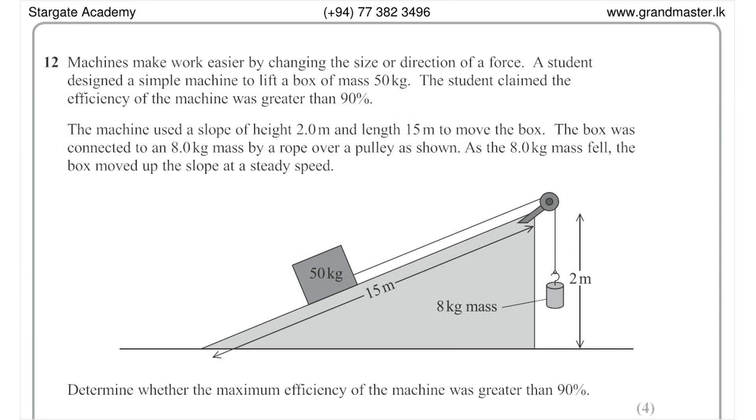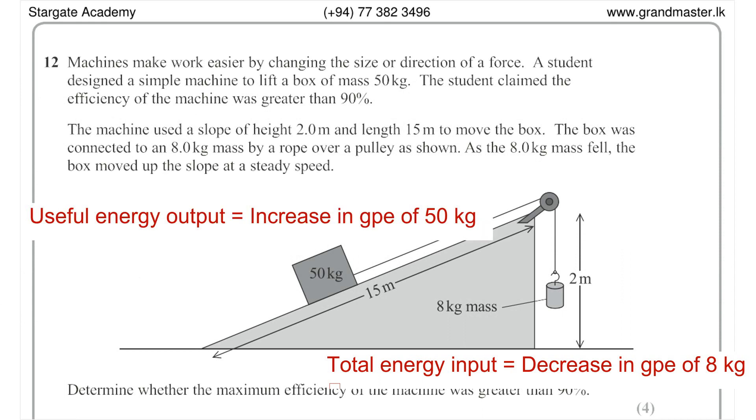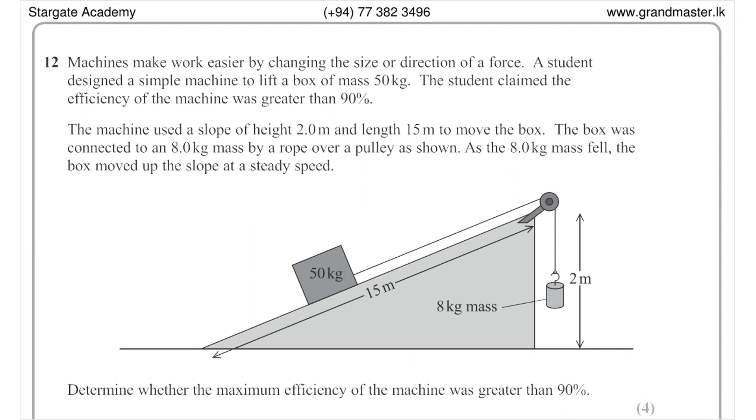energy is provided by decreasing gravitational potential energy of the 8 kg mass, and useful work is done on the 50 kg mass by increasing its gravitational potential energy. When calculating the increase in gravitational potential energy of the 50 kg mass,